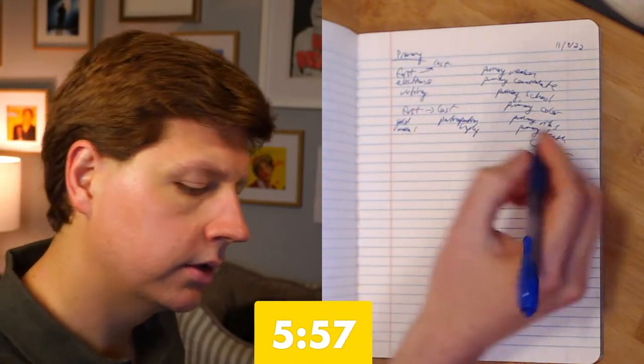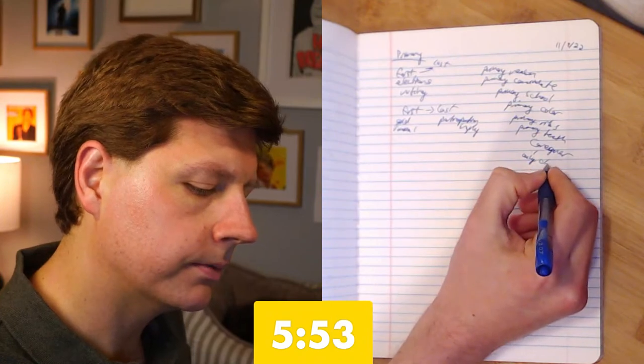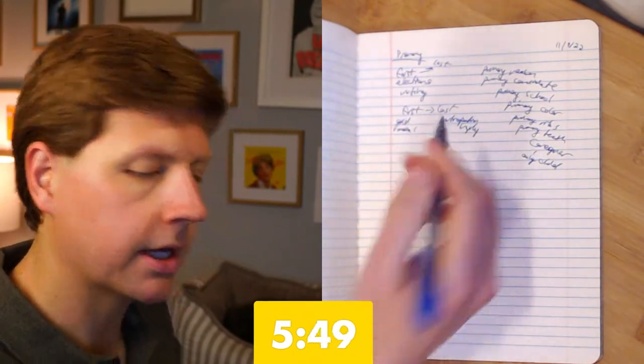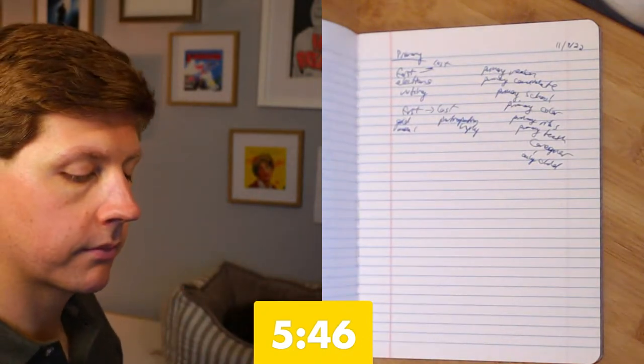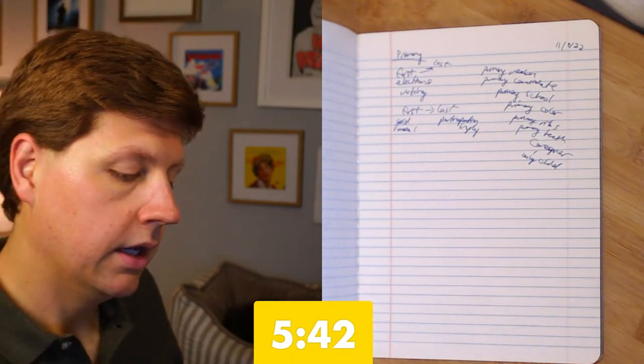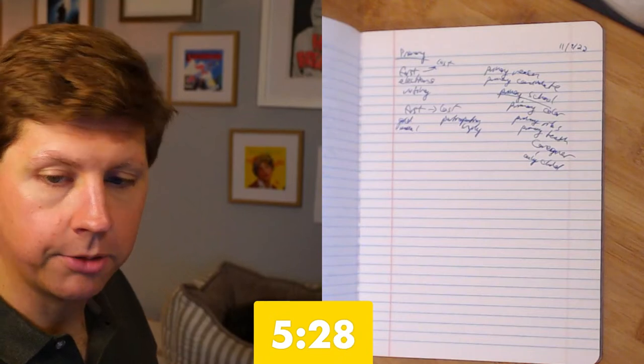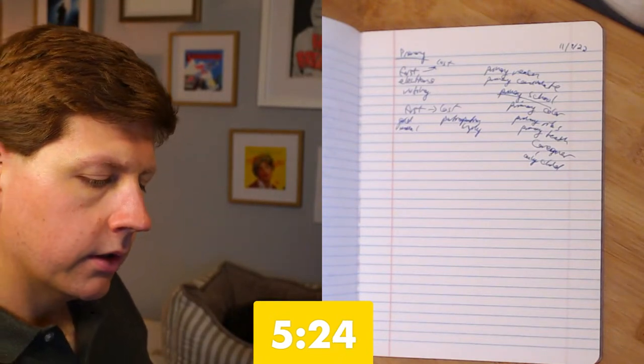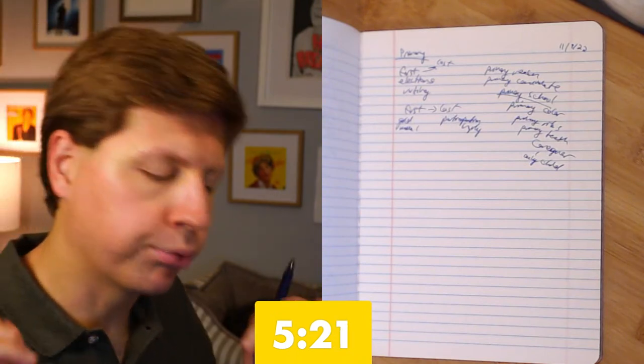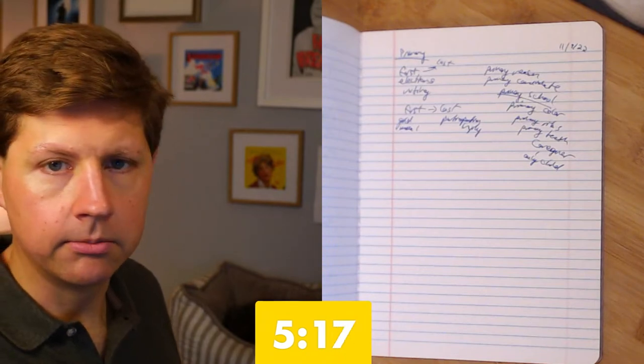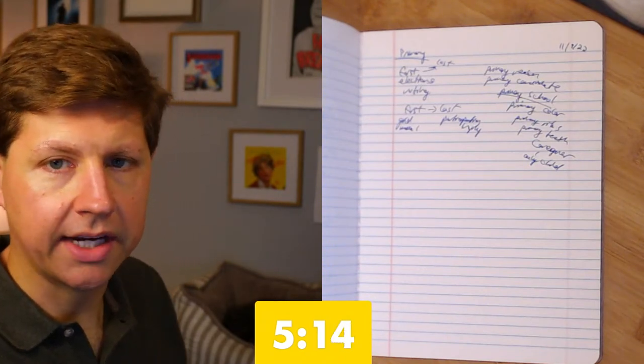Caregiver. So maybe with primary caregiver, maybe there's a joke around being the oldest or being the only child. A joke using primary school could be something about flunking out of college and be like, relax. That was just my primary school. And then it could be like your reach school. So as we're getting to five minutes, I usually like to brainstorm the first five minutes and then construct the joke in the second.